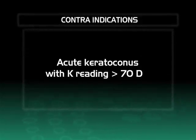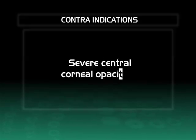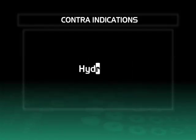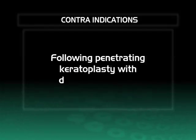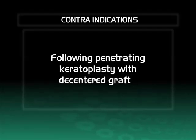Contraindications: Acute keratoconus with keratometry reading greater than 70 diopters. Corneas with large central opacities. Hydrops. After penetrating keratoplasty when the graft is decentered or sutures are still in place.